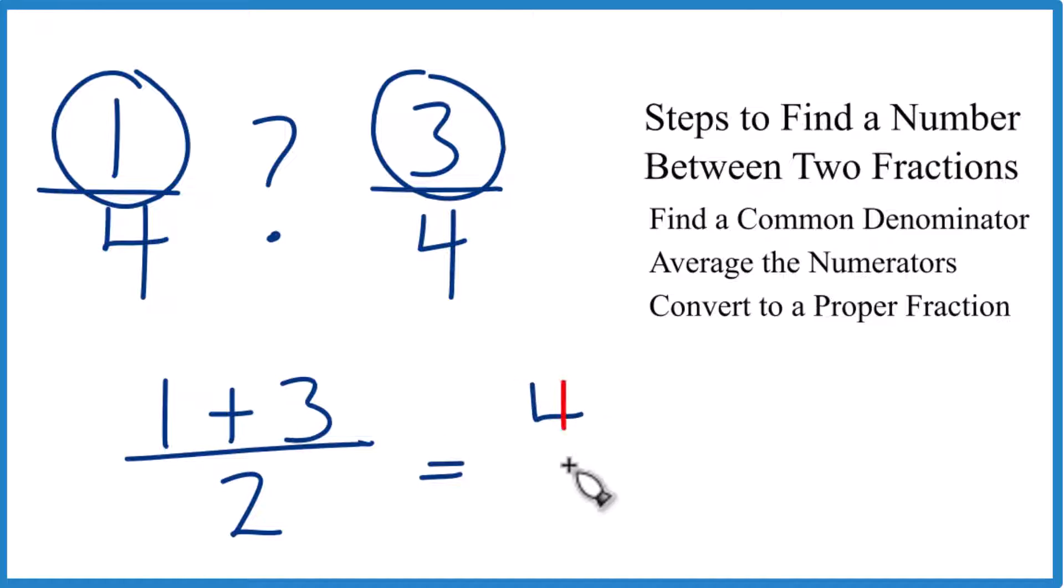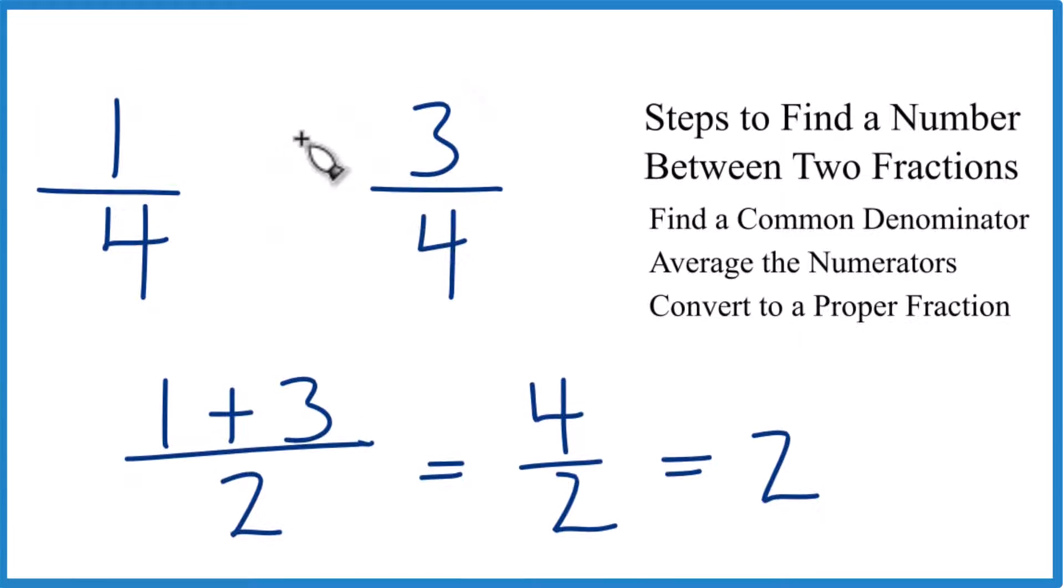1 plus 3 is 4. 4 divided by 2, and that's 2. So we're going to end up with the numerator will be 2, and then we keep the denominator there. So 2/4, that's the number between 1/4 and 3/4.